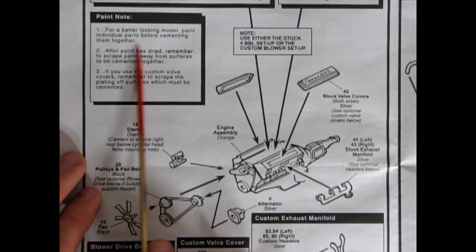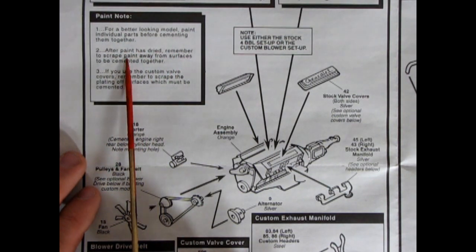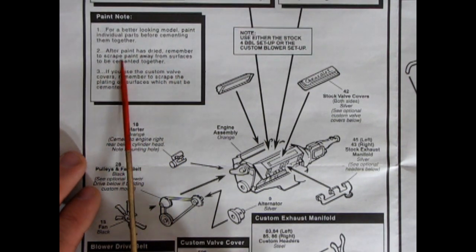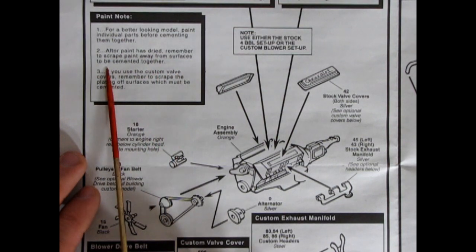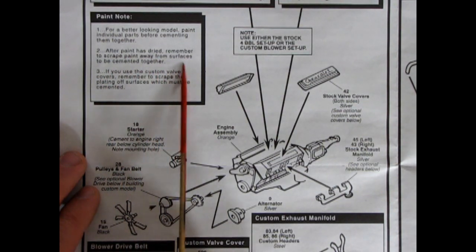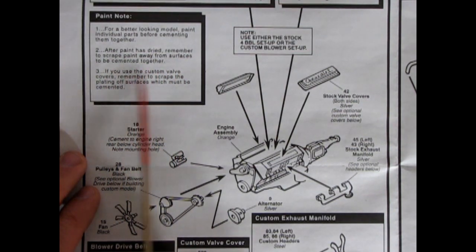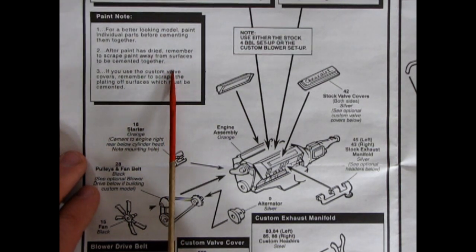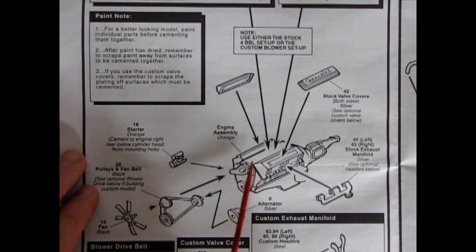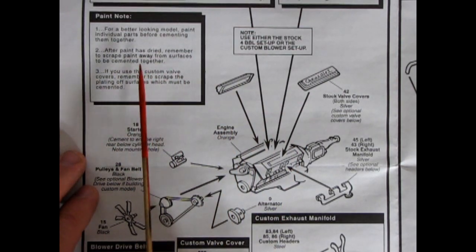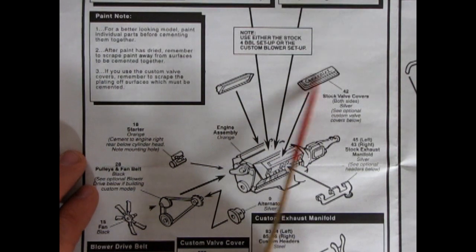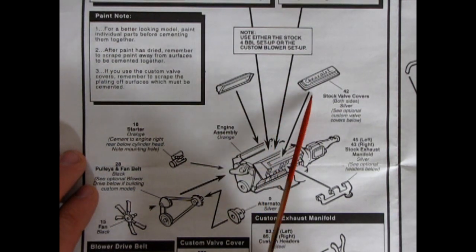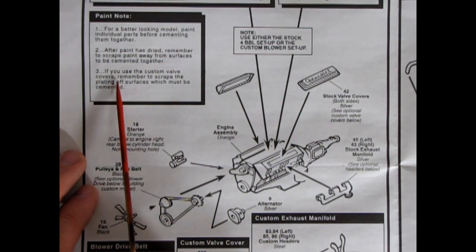Okay, and then down here we've got our engine for our 302 with painting notes. For a better looking model, paint individual parts before cementing them together. After paint is dried, remember to scrape paint away from the surfaces to be cemented together. That's the big one. And a lot of guys will use like 10x7 and all these kind of super funky glues because they don't want to scrape the paint away.